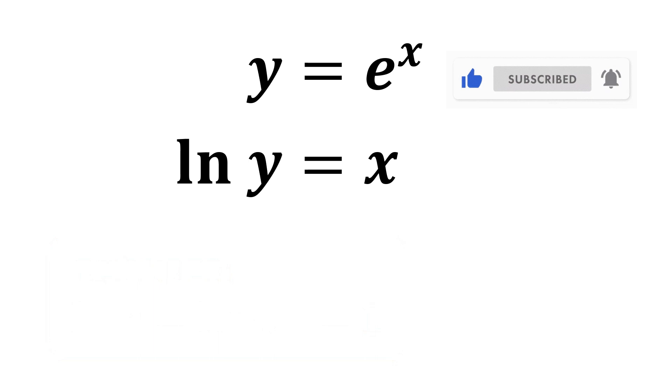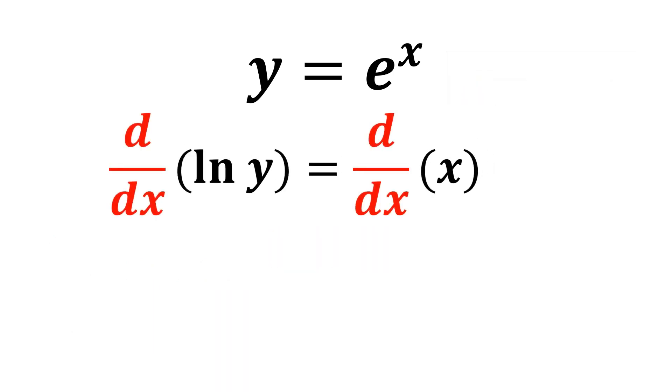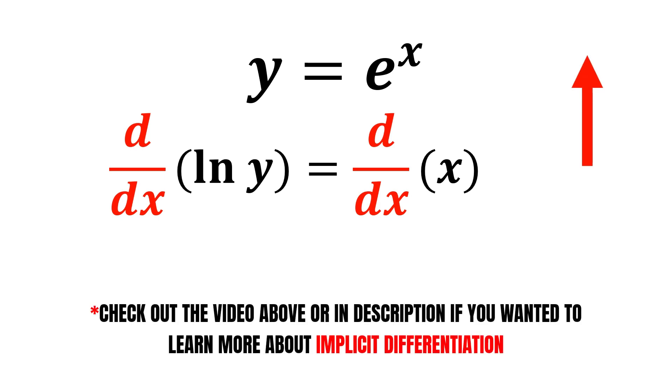Now we take the derivative of this by applying implicit differentiation. We take the derivative on both sides. You may check out the video above or in description if you wanted to learn more about implicit differentiation.